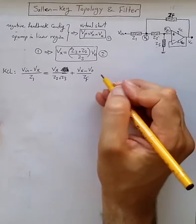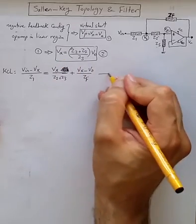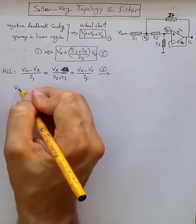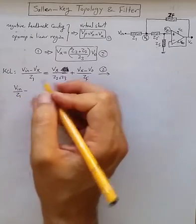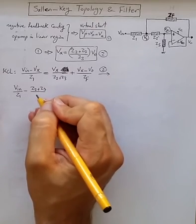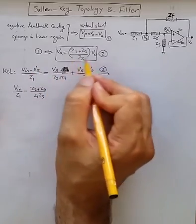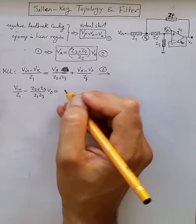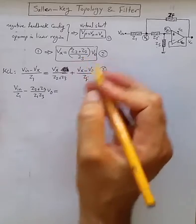Now we can replace the value of Vx with equation 2. So from equation 2, let's do it here. So Vn divided by Z1 minus Z2 plus Z3 divided by Z1 Z3. I'm just replacing Vx with its equivalent from equation 2.